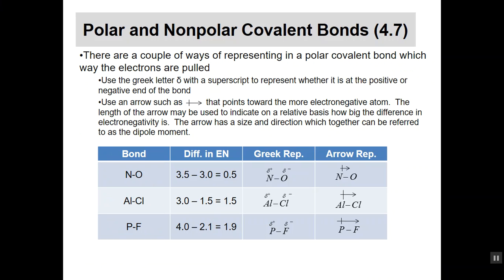There are a couple of ways to represent polarity in a bond. One uses Greek delta letters to show partial charges — for example, oxygen pulls electrons more than nitrogen, so oxygen has a delta-negative and nitrogen has a delta-positive. A more descriptive way uses an arrow: the tail end looks like a plus sign (the positive side), and the arrowhead points toward the more negative end — toward where the electrons are being pulled.